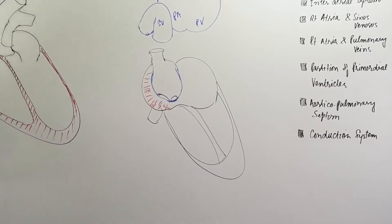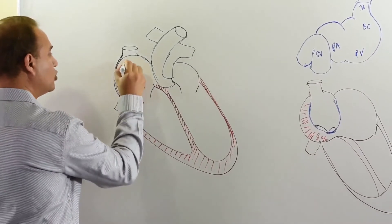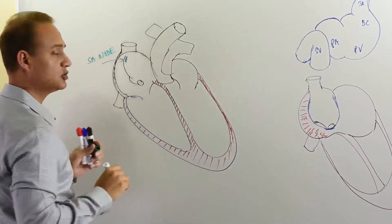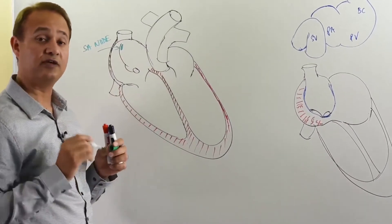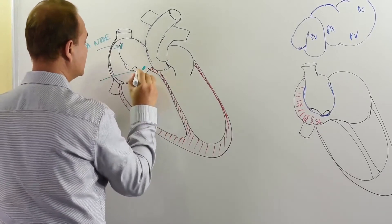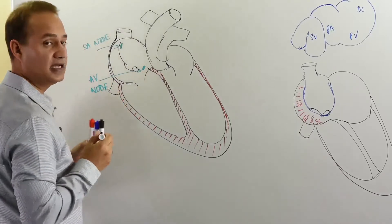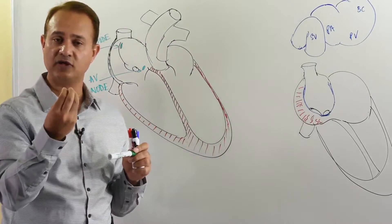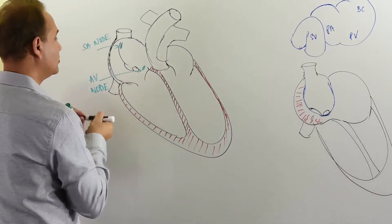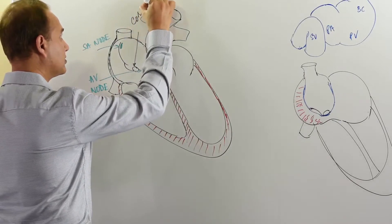First, let us look at the standard structures involved in the conduction system. There is an SA node present near the opening of the superior vena cava. There is an AV node present behind the endocardial cushions and in front of the coronary sinus.